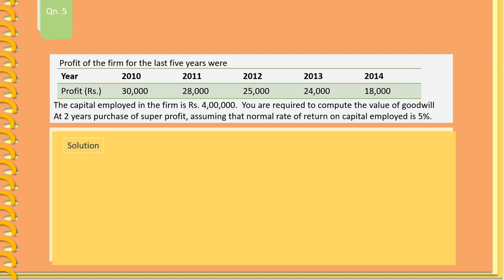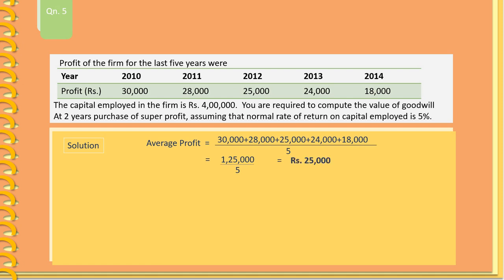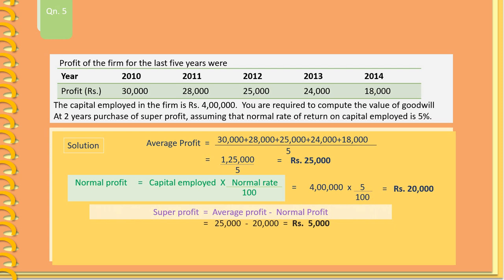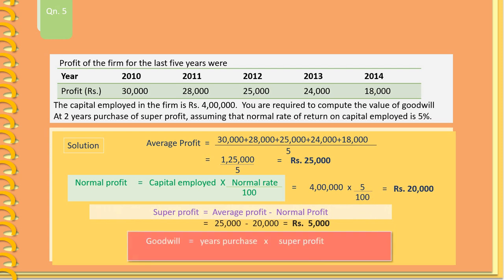Average profit equals Rs. 25,000. Normal profit equals capital employed multiplied by normal rate of return: 4,00,000 into 5 divided by 100 equals Rs. 20,000. Super profit equals average profit minus normal profit: 25,000 minus 20,000 equals Rs. 5,000. Goodwill equals years of purchase into super profit: 2 into 5,000 equals Rs. 10,000 goodwill.